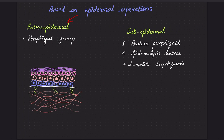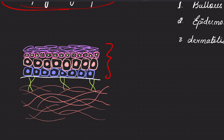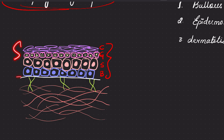Under the intra-epidermal group, we have the pemphigus group. What does intra-epidermal mean? The layers of the epidermis are stratum corneum, granulosum, spinosum, and basal. When the split is intra-epidermal, it occurs anywhere between these layers — such as between stratum corneum and granulosum, or between spinosum and basal. In pemphigus vulgaris, for example, there is a suprabasal split above the basal layer, whereas in foliaceus, the split is sub-corneal, that is, below the stratum corneum. A sub-epidermal split means the split is between the epidermis and the dermis.